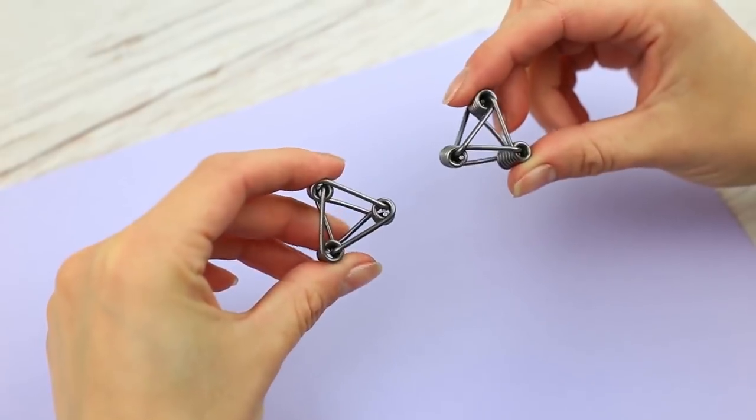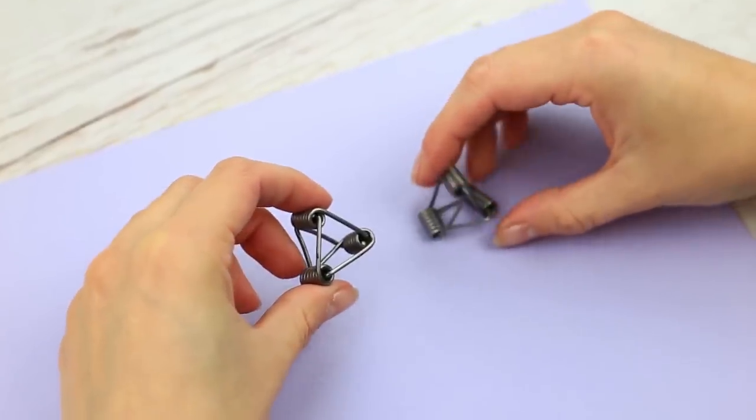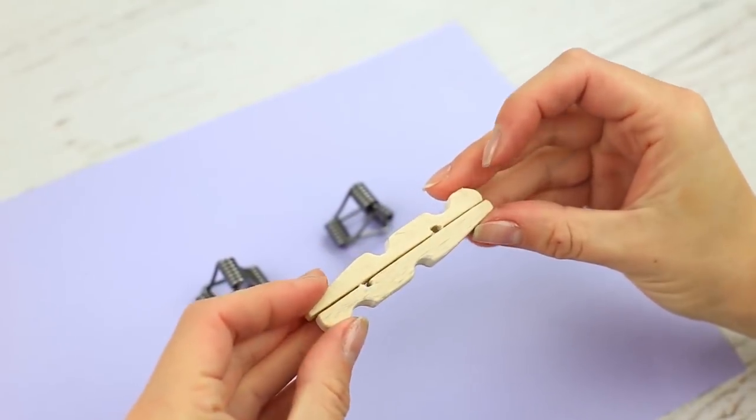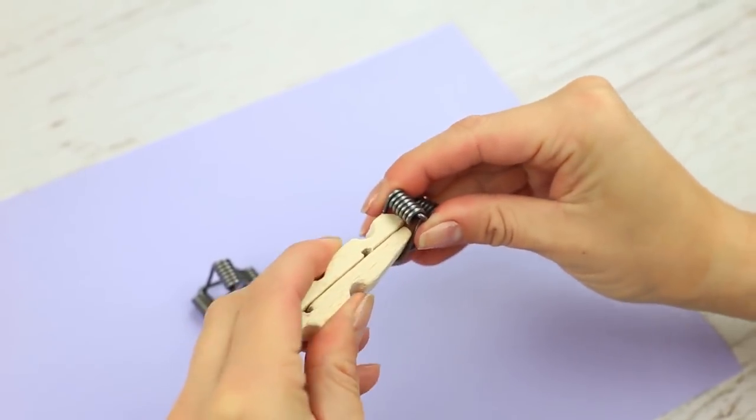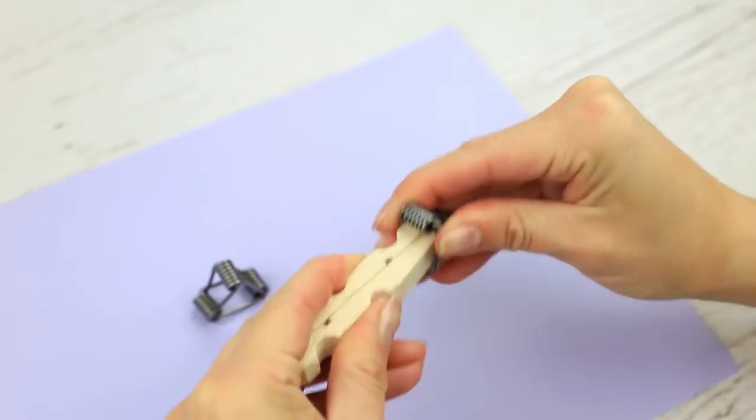Make another of the same detail. Join two wooden parts by the flat sides. Make sure the clothespin tips are opposite to each other. Put the spring triangles onto the sides.